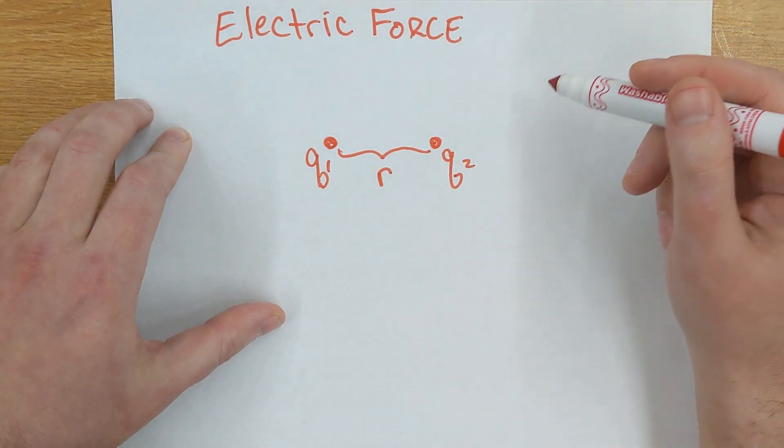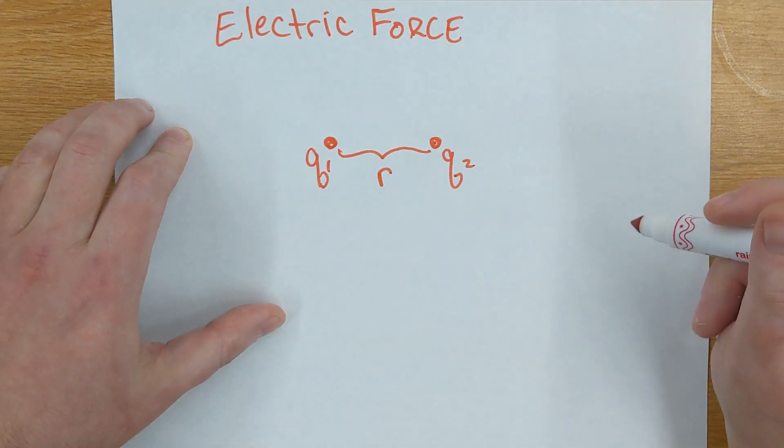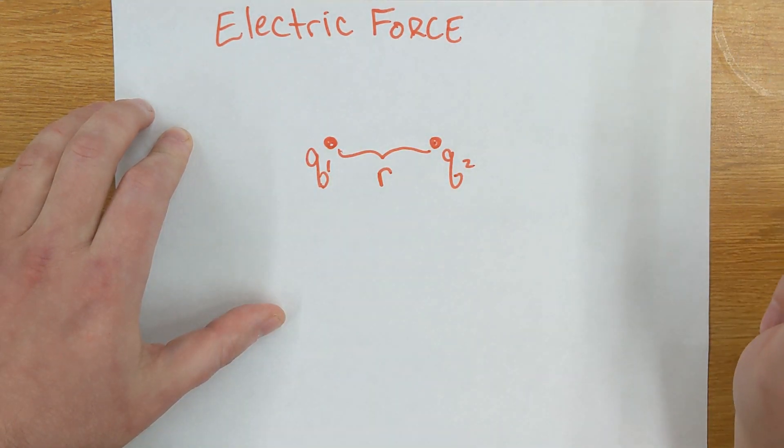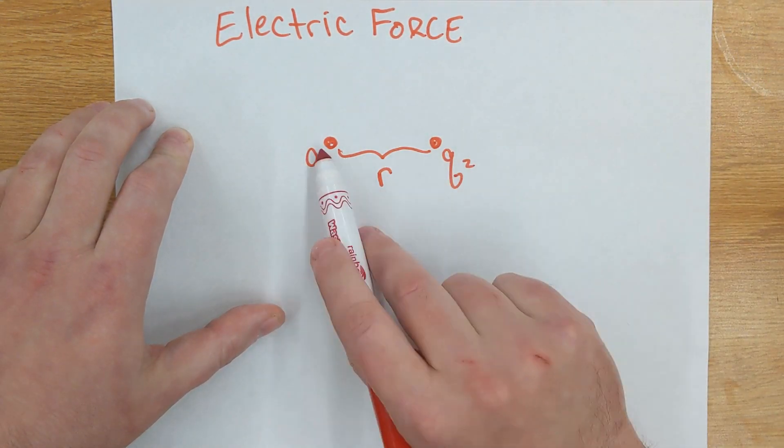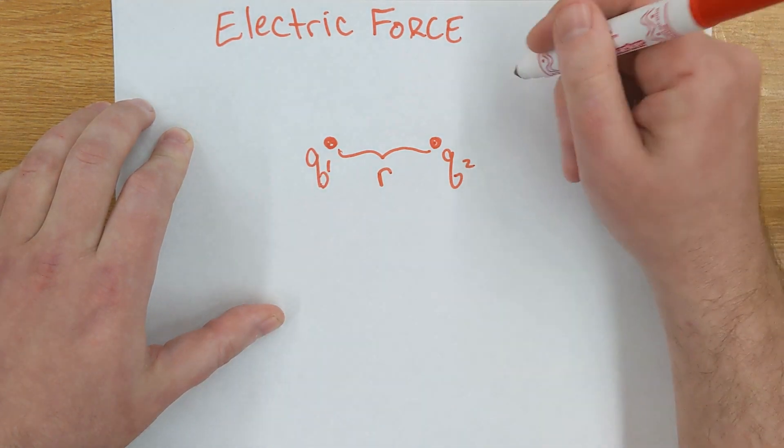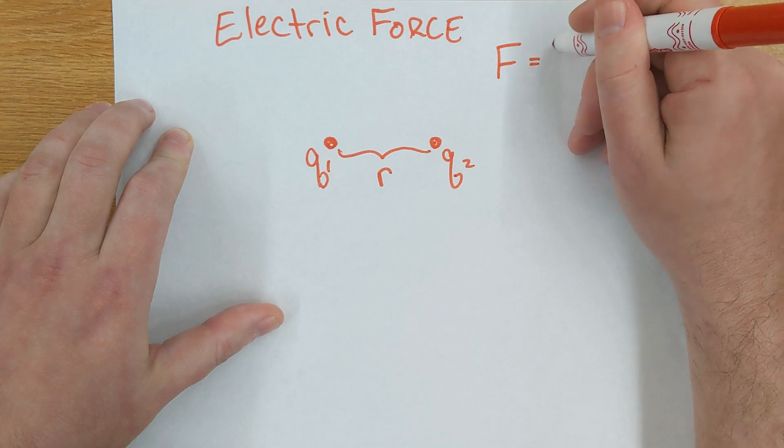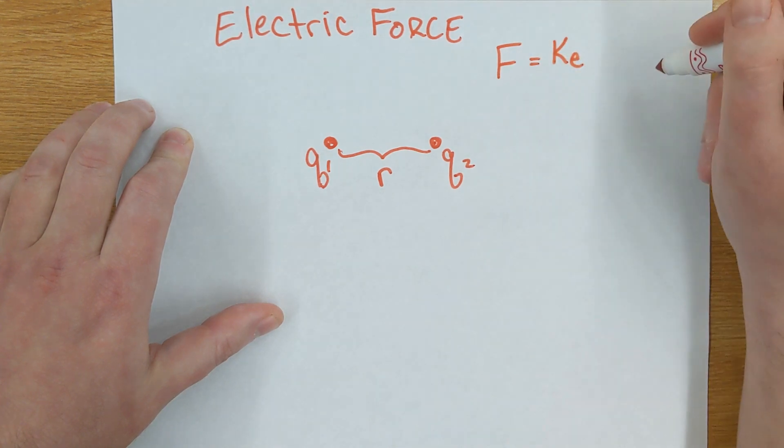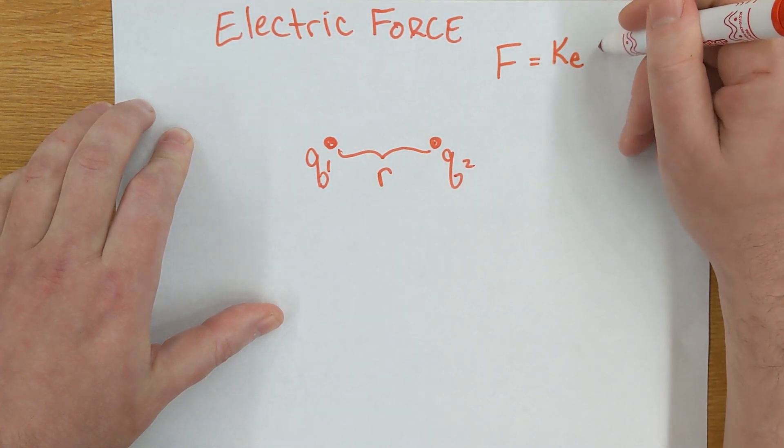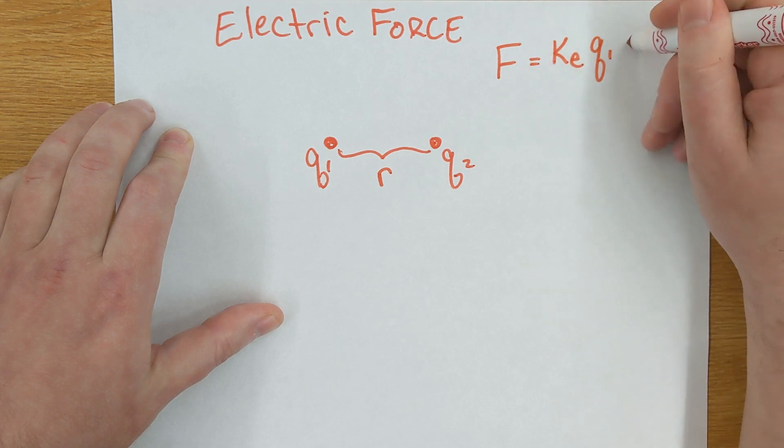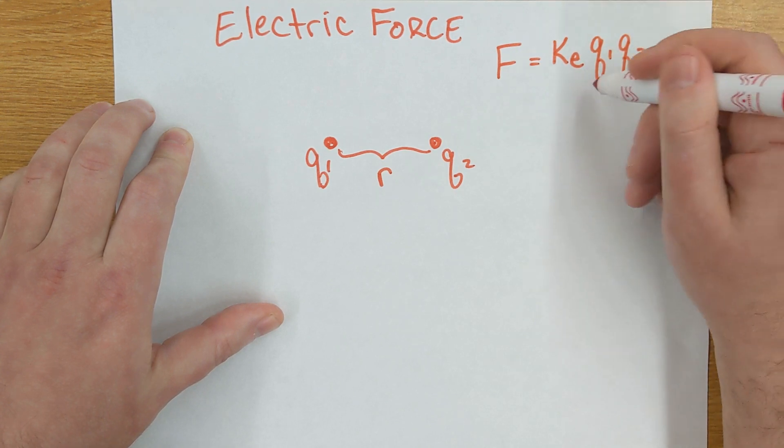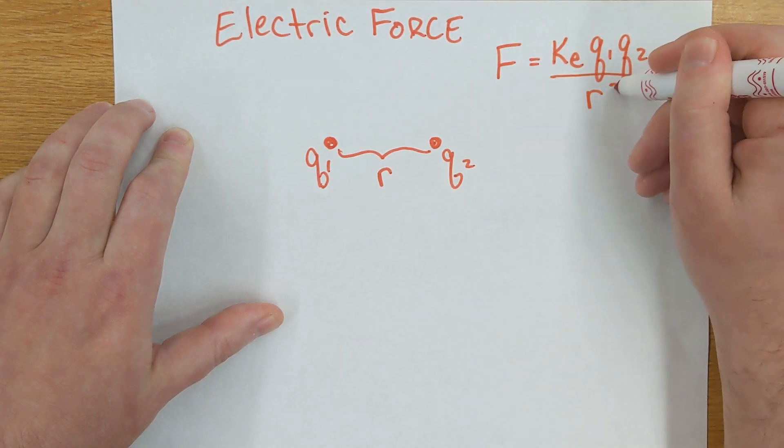We call that R because often, since these things are spherically symmetric, it makes sense to use polar coordinates. So we're calling that distance a radius measured from the first charge. What Coulomb's law says is that force is proportional to some constant ke, the electric constant, times the strength of charge 1 times the strength of charge 2 divided by the distance between them squared.